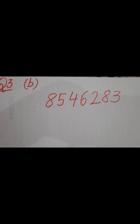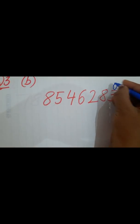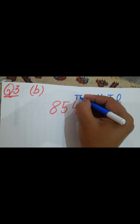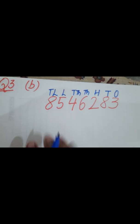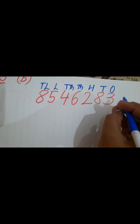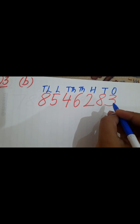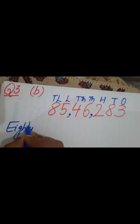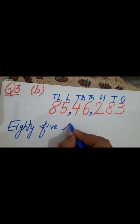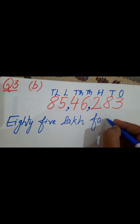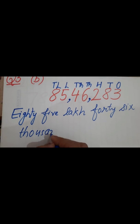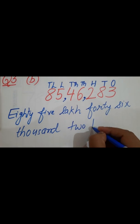Now the B part of question number 3. The digit positions are: ones, tens, hundreds, thousands, ten thousands, lakh, ten lakh. We insert commas according to the Indian system: after every 3 digits from the right, then skip 2 digits. The number in words is: 85 lakh 46 thousand 2 hundred 83.